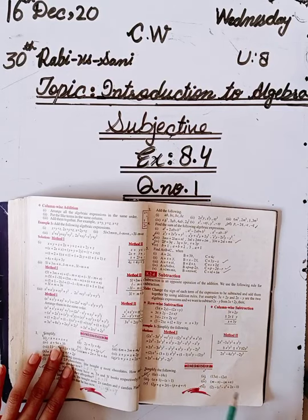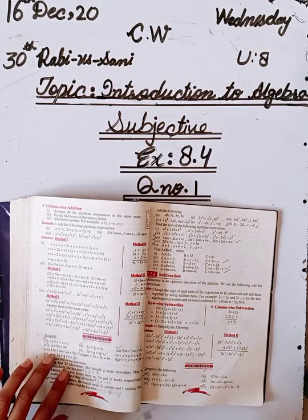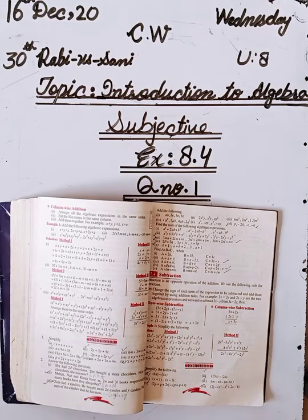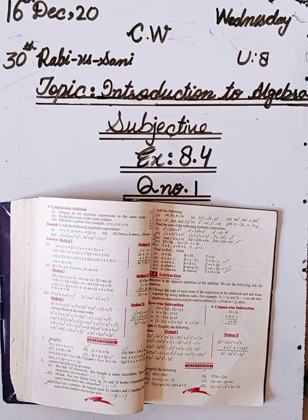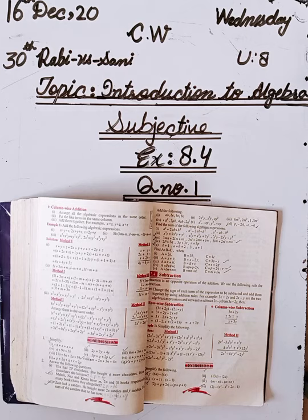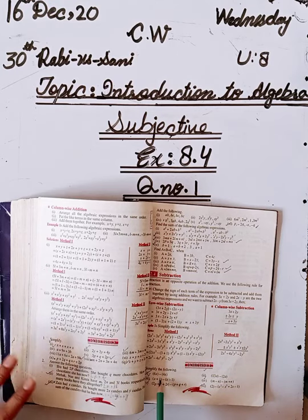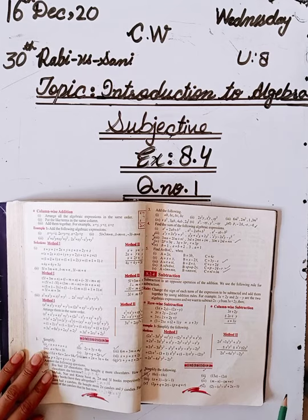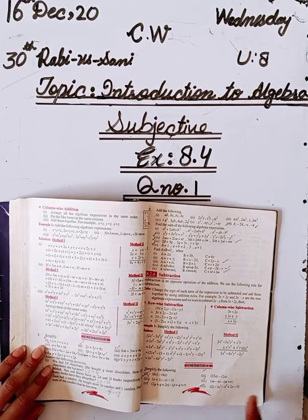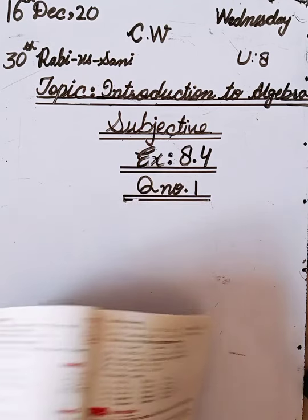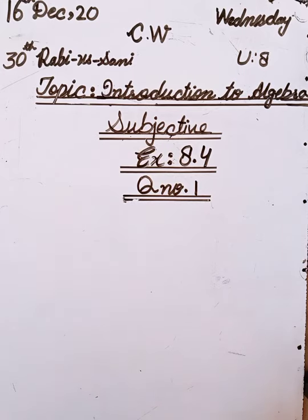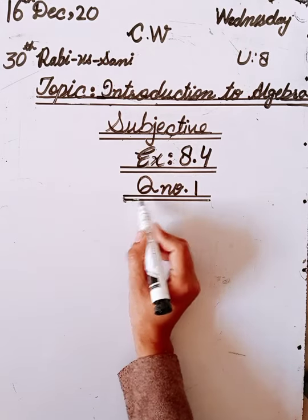Question number one: simplify the following expressions. We have to subtract. We have algebraic expressions we have to subtract. Last time we added algebraic expressions, now we have to subtract because here we have the minus sign. Let's start question number one, part five.